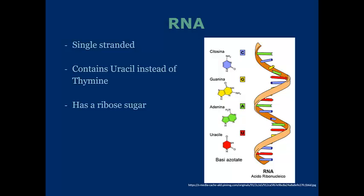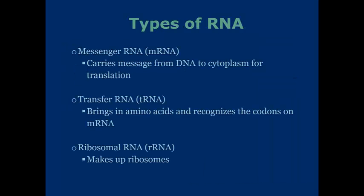At the right is a picture of RNA. There are three types of RNA in particular. There's messenger RNA, mRNA, which carries messages from DNA to the cytoplasm for translation. Transfer RNA brings in the amino acids and reads the codons on the mRNA.